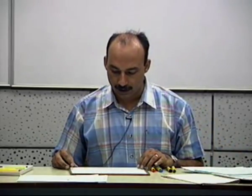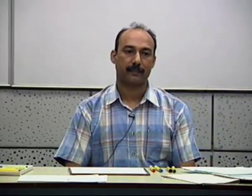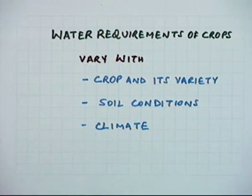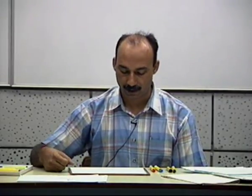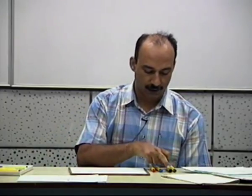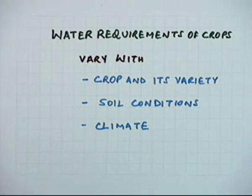So far we have been dealing with the characteristics of soil and how it interacts with water. But the third component — when we started the topic of soil, water, and plant relationships — is the plant. We should now start looking at how plants interact with the remaining two components, and what are the water requirements of a crop.